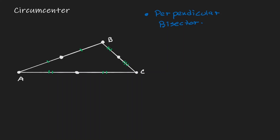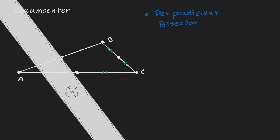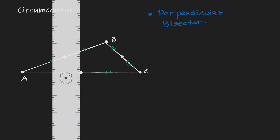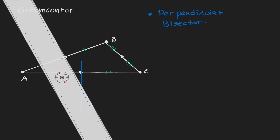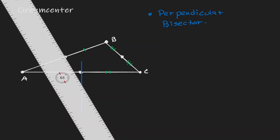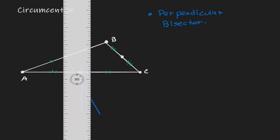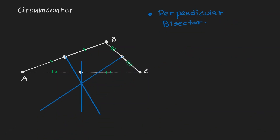Now let me draw some perpendicular lines at those points to draw our perpendicular bisectors. Let's take out a ruler and draw perpendicular lines. Here we have our first, now our second — that looks perpendicular — and here we have our last. Notice that all perpendicular bisectors meet at a point.